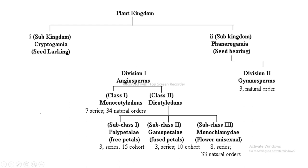The plant kingdom is divided into two sub-kingdoms: the first is Cryptogamia, meaning seed-lacking plants, and the second is Phanerogamia, meaning seed-bearing plants. The sub-kingdom Phanerogamia is again divided into two divisions: the first is Angiosperms and the second is Gymnosperms. Angiosperms are divided into two classes: the first class is Monocotyledons and the second class is Dicotyledons. Angiosperms Monocotyledons include about seven series and 34 natural orders; Gymnosperms include about three natural orders.